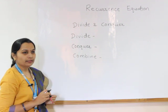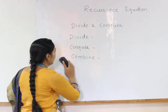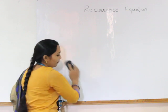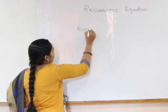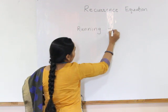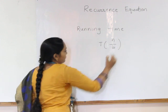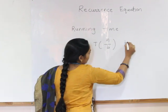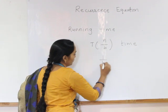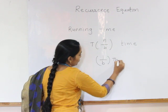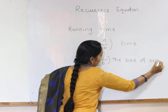Now, we are going to find the running time of the divide and conquer strategy. The divide and conquer problem running time takes T of n by b time of the sub-problem, which is of size 1 upon b, the size of the original problem.